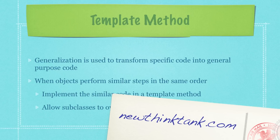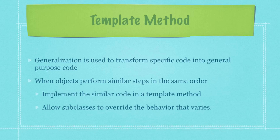In going through and explaining how the template method pattern works in this refactoring, the template method pattern actually fits into a part of code refactoring called generalization. What it is used to do is transform specific code into general purpose code, and in so doing, this is going to simplify as well as remove duplicate code. The template method pattern itself is going to help you eliminate all that duplicate code, and you're going to know when you need to use it when you notice that objects are performing similar steps in the same order.